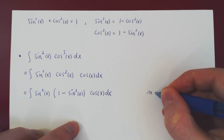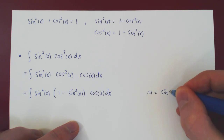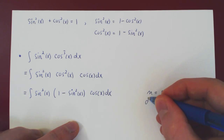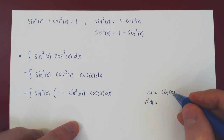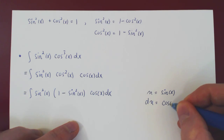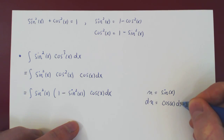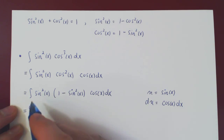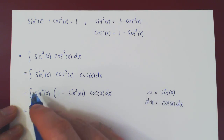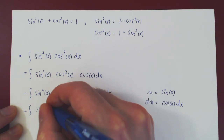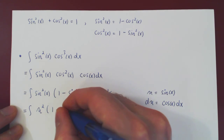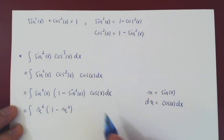Now we make our u-substitution. Everything is a function of sin(x) times cos(x) dx, so we let u = sin(x). The differential of u is the differential of sin(x), which is cos(x) dx. So we replace: sin²(x) becomes u², (1 - sin²(x)) becomes (1 - u²), and cos(x) dx is simply du.